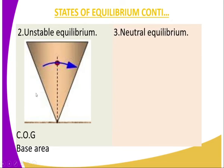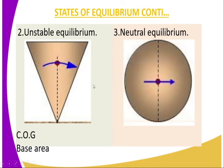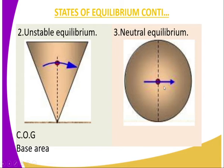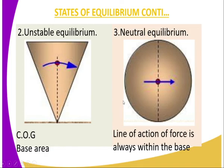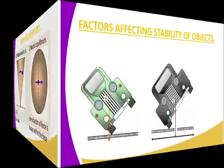We have neutral equilibrium. What is neutral state of equilibrium? Considering the base area and the center of gravity — for this kind of shape, the center of gravity is at the center, and the line of action will always pass through the base since it does not change. So we can't say that this kind of shape will topple from one direction to another, since the line of action of the force will always remain within the base area.